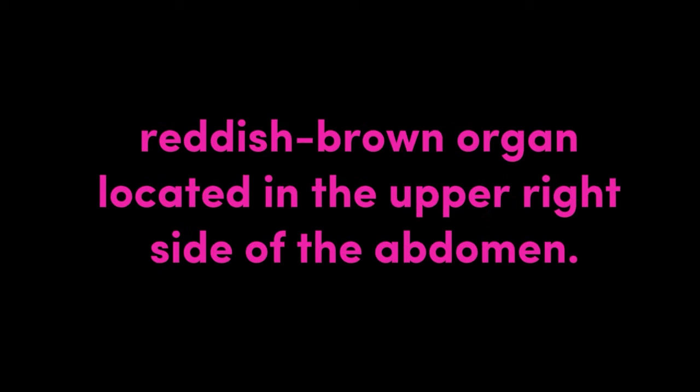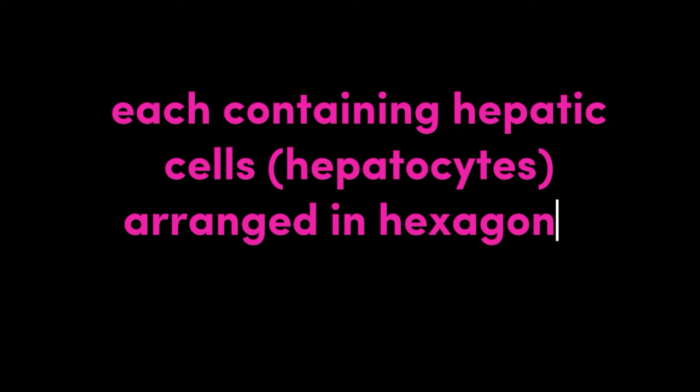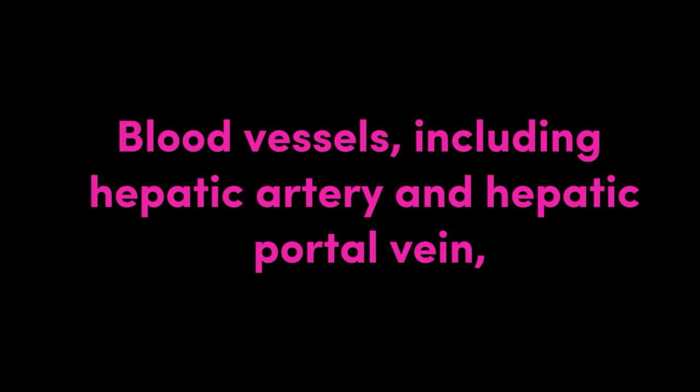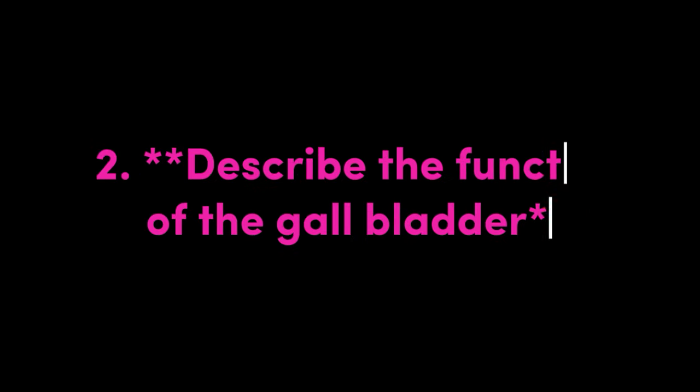Answer: The liver is a large, reddish-brown organ located in the upper right side of the abdomen. It consists of lobules, each containing hepatic cells — hepatocytes arranged in hexagonal plates. Blood vessels, including the hepatic artery and hepatic portal vein, are also present within the liver.